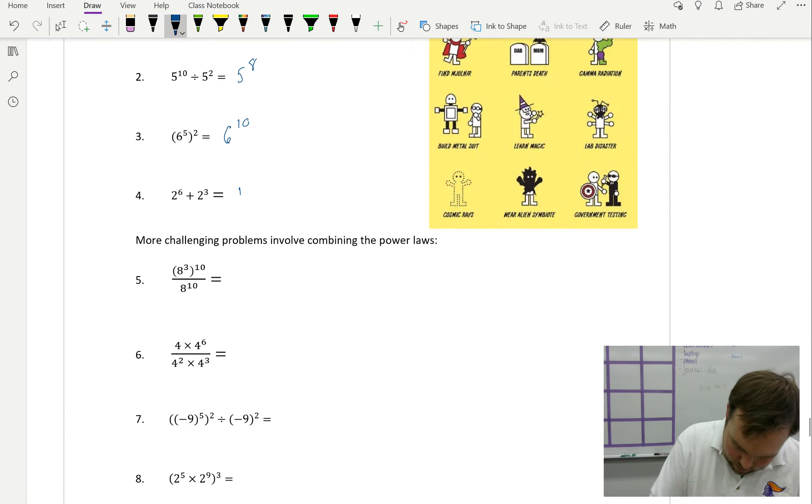This is a trap. There is no power rule with addition or subtraction. We can't write that as 2 to the 9. The best we can do is write it out separately and consider what each of those looks like. And it might work out nicely, it might not. 2 to the 6, well, going down the 2's, that's 2 to the 1, 2, 3, 4, 5, 6. So really, this is 64 plus, well, 2 to the 3 is 8.